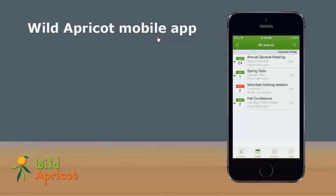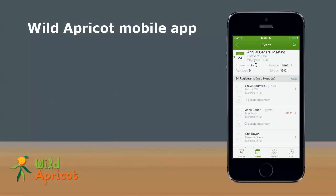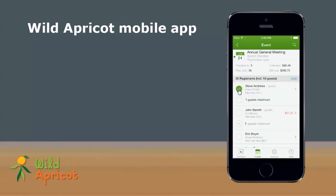On Wild Apricot's mobile app, you check in a registrant by tapping the open circle beside the registrant's name, within the registrant's list, or within the registration details.